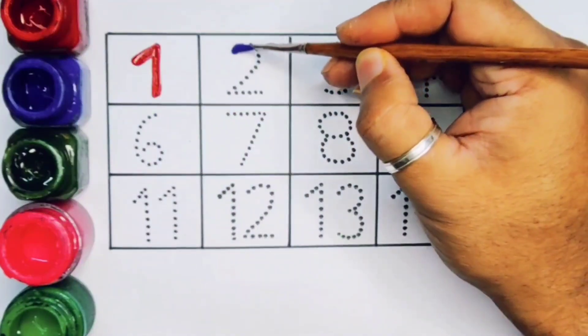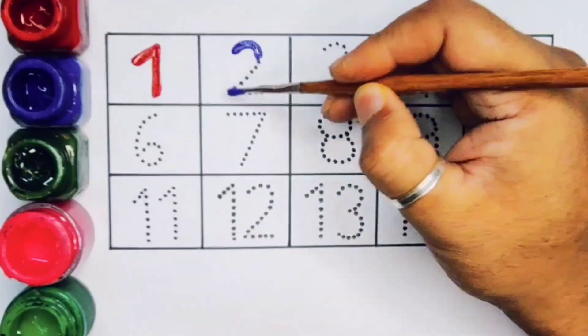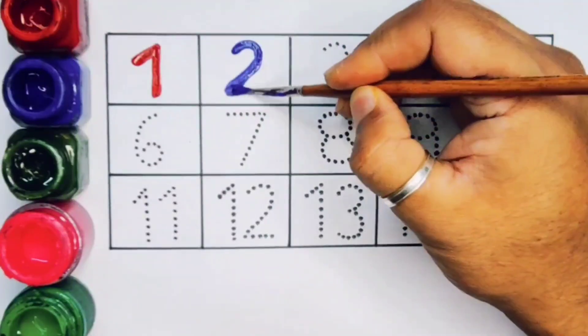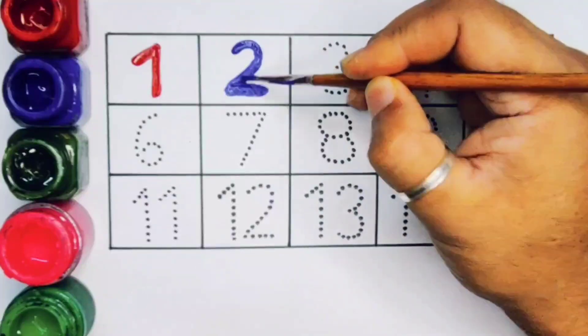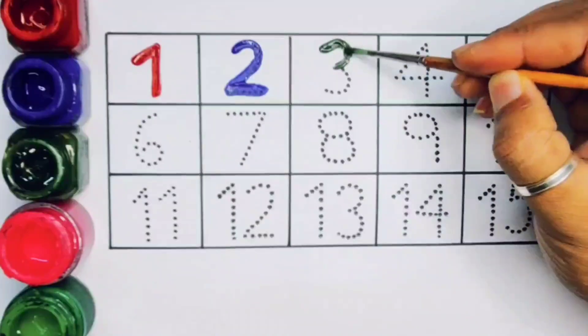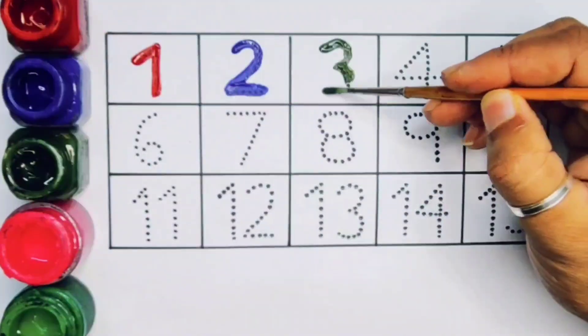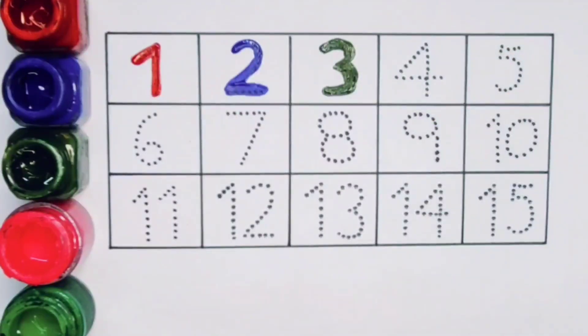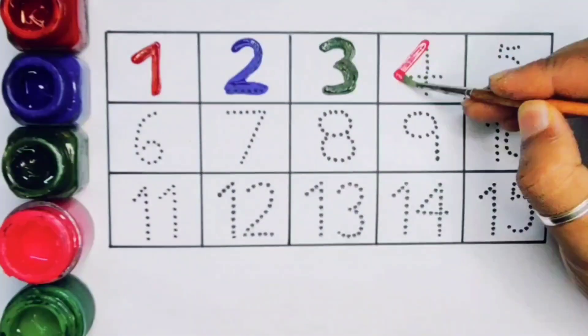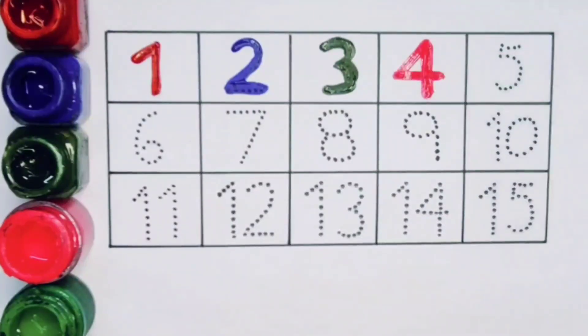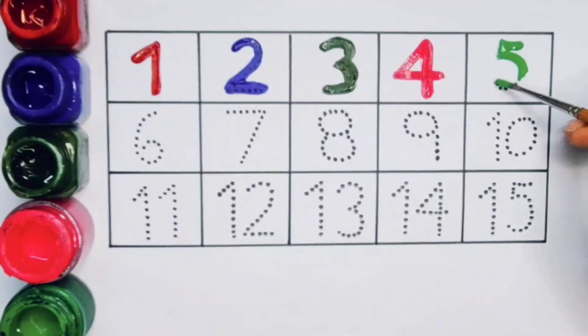Now let's learn the numbers. 1, number 1. Next, 2, number 2. Next kids, 3, number 3. Next, 4, number 4. Next kids, 5, number 5.